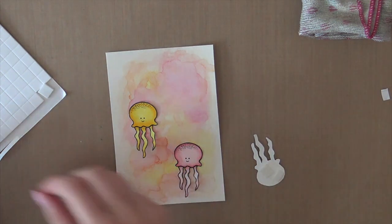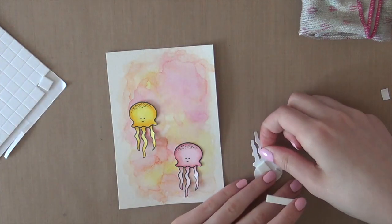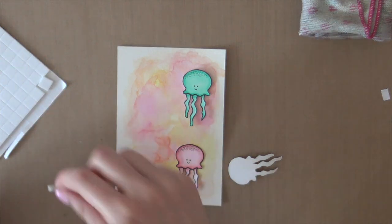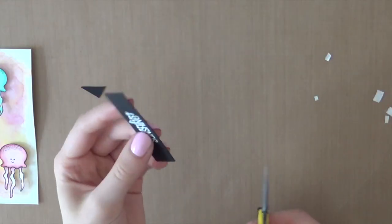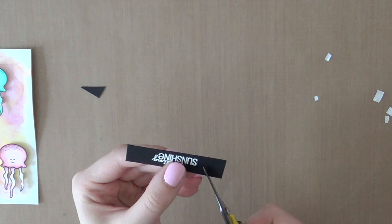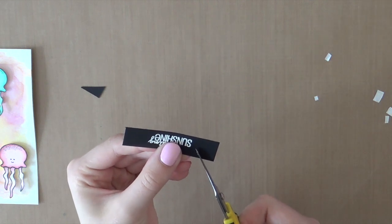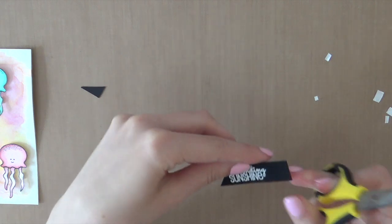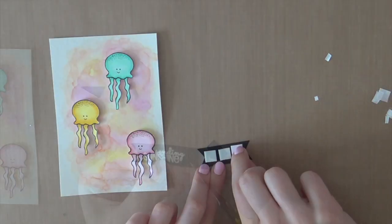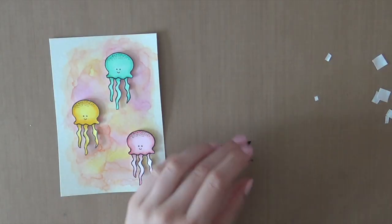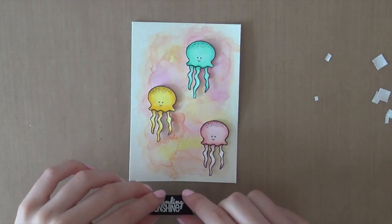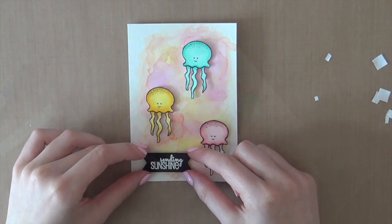I cut out the jellyfish and I am going to adhere them onto the watercolor background using some foam adhesive. So I am doing that while the paper is completely dry. And then after heat setting that embossing powder, I am going to cut that little strip of black cardstock to a banner and then I can easily adhere it onto that watercolor piece using some foam squares.